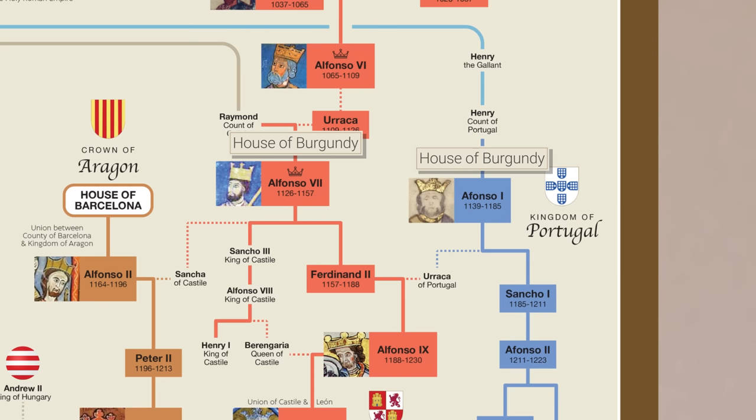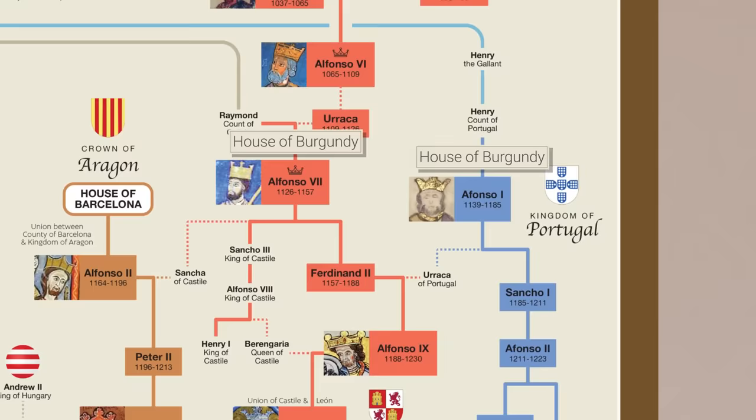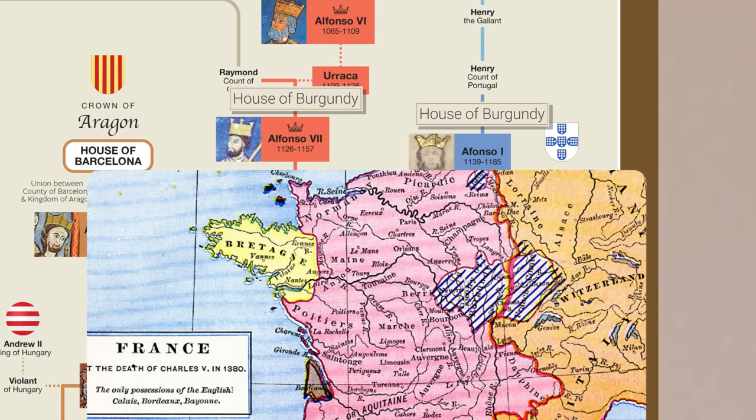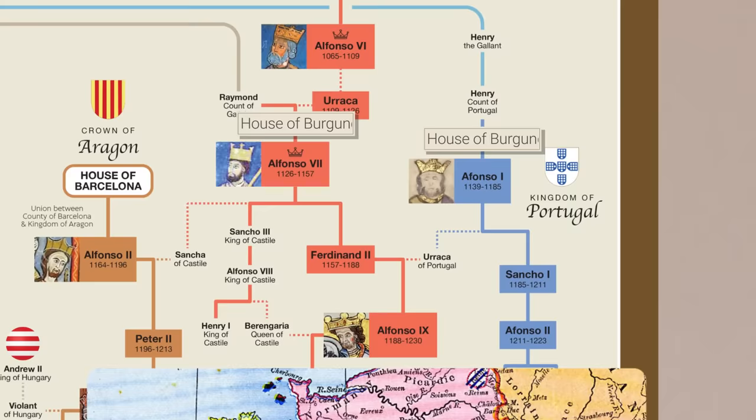You might expect with the close proximity of Spain and Portugal that this was one royal house that came to power in both countries, like the French Bourbons and the Spanish Bourbons, or the Spanish Habsburgs and the Austrian Habsburgs. But in fact, these are two totally separate families. At various points in the Middle Ages there was a kingdom called Burgundy, but in the 12th century that land had been divided. The Spanish House of Burgundy descended from the County, and the Portuguese House of Burgundy came from the Duchy.